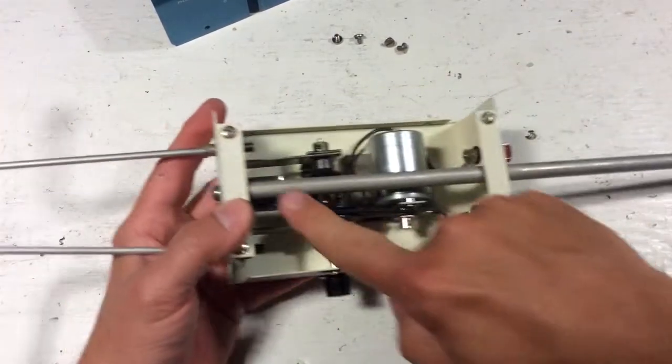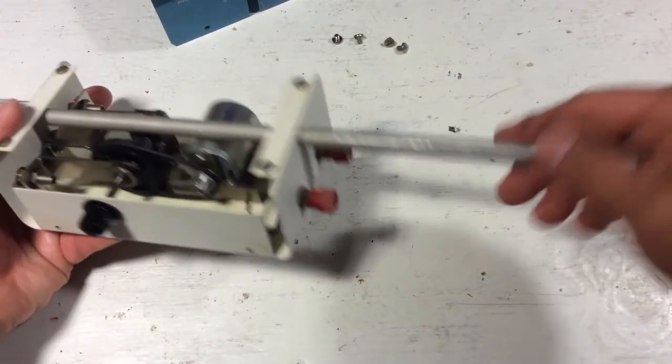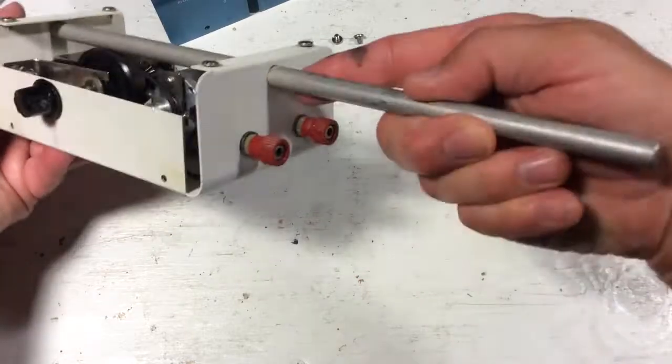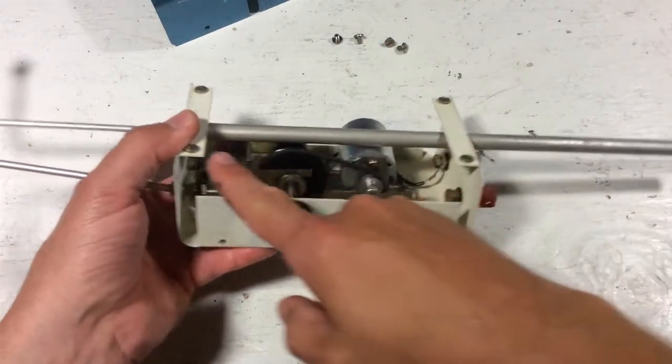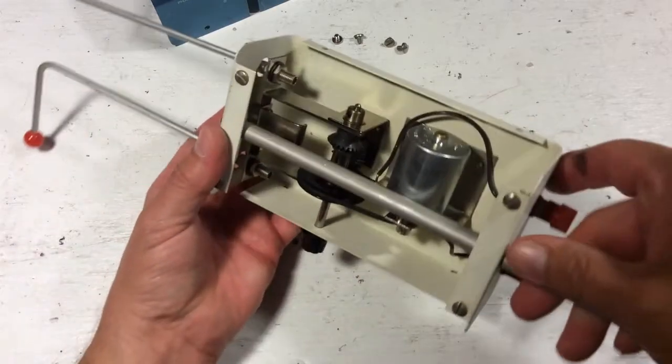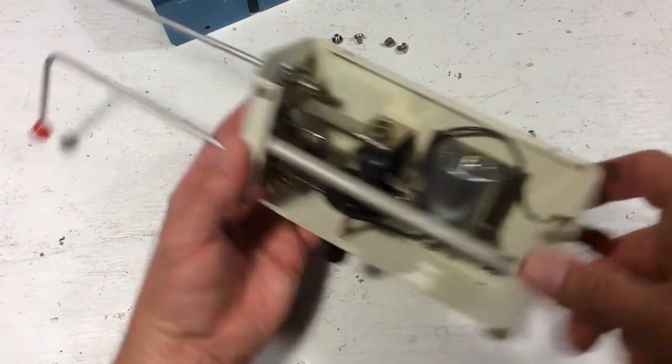But I don't understand what this is supposed to do. So that's my question for you. It has this long probe or handle here on the end or something. This is connected to the chassis, to the housing. Nothing makes any sense here to me.